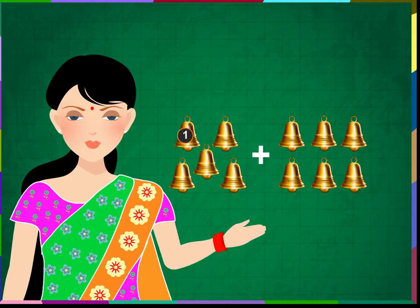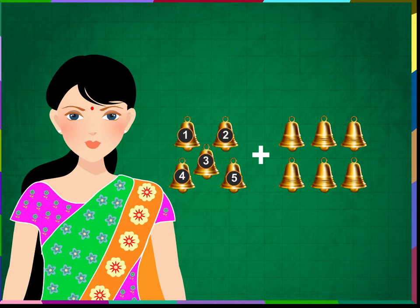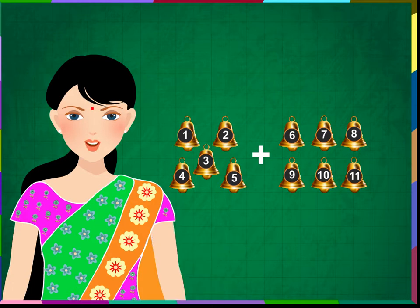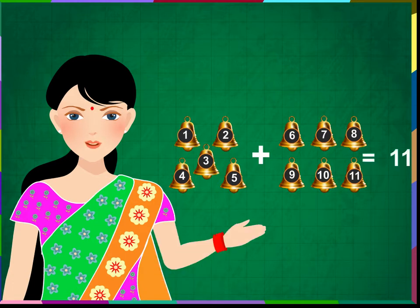Counting: 1, 2, 3, 4, 5, 6, 7, 8, 9, 10, 11. 5 bells and 6 bells make 11 bells.